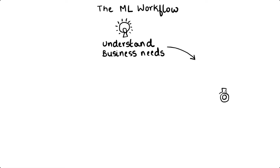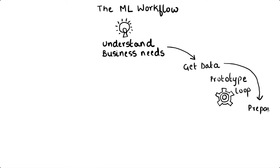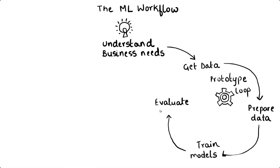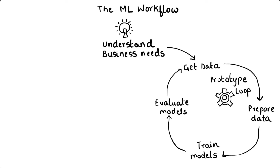Once you've clearly defined your business need, the next step is prototyping. Prototyping can be described as an iterative process — a feedback loop within the overall machine learning flow. It consists of getting data and preparing that data, training your models, and then evaluating the models. Let's take a closer look at each step within the prototyping feedback loop.